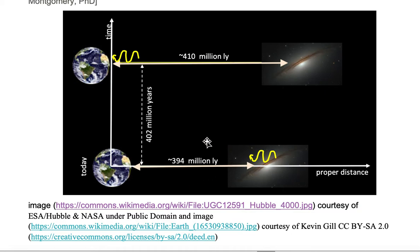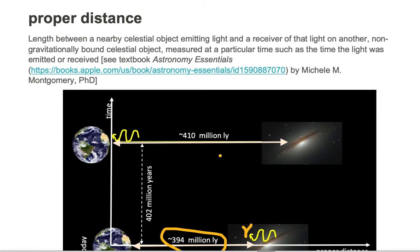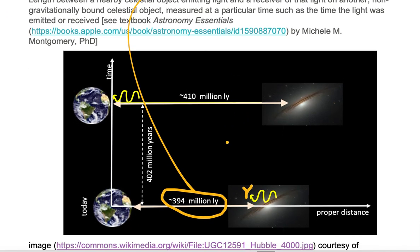At a proper distance of around 394 million light years we see a galaxy emitting a yellow photon. This distance of approximately 394 million light years is an example of proper distance. It's the distance between two celestial objects, one of them emitting light.